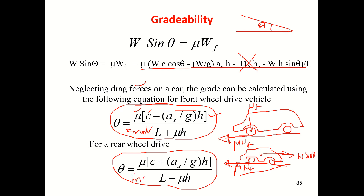This means that for good grade ability, a rear wheel drive vehicle is better than a front wheel drive vehicle. That is why heavy trucks and large vehicles are preferred to be rear wheel driven. Many use rear engine rear wheel drive — they will have good grade ability.